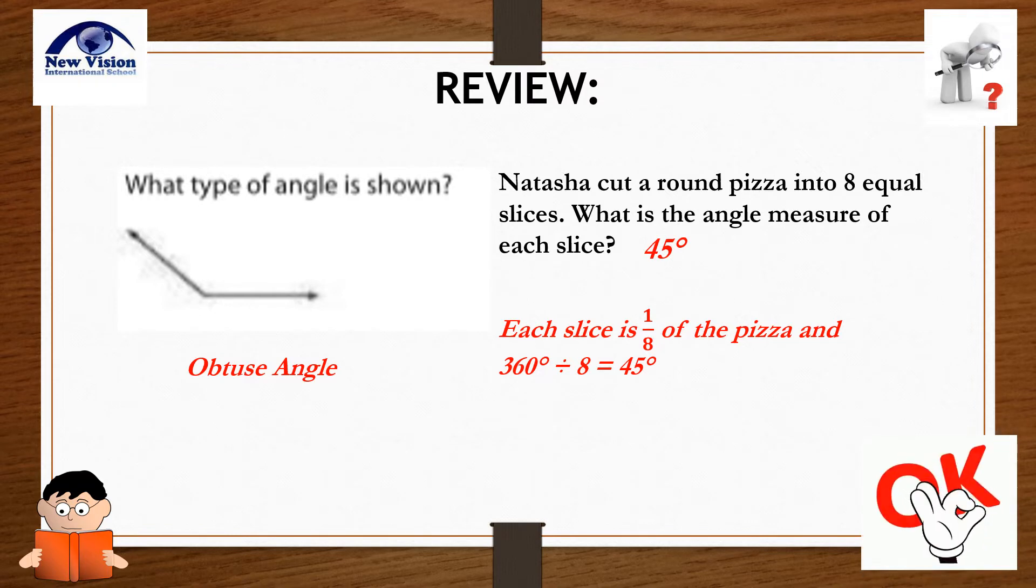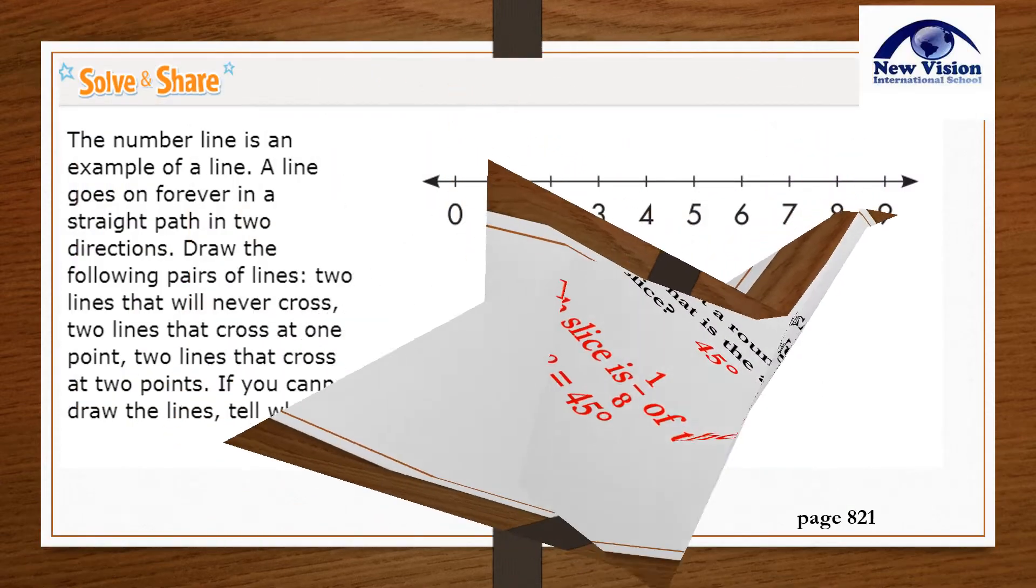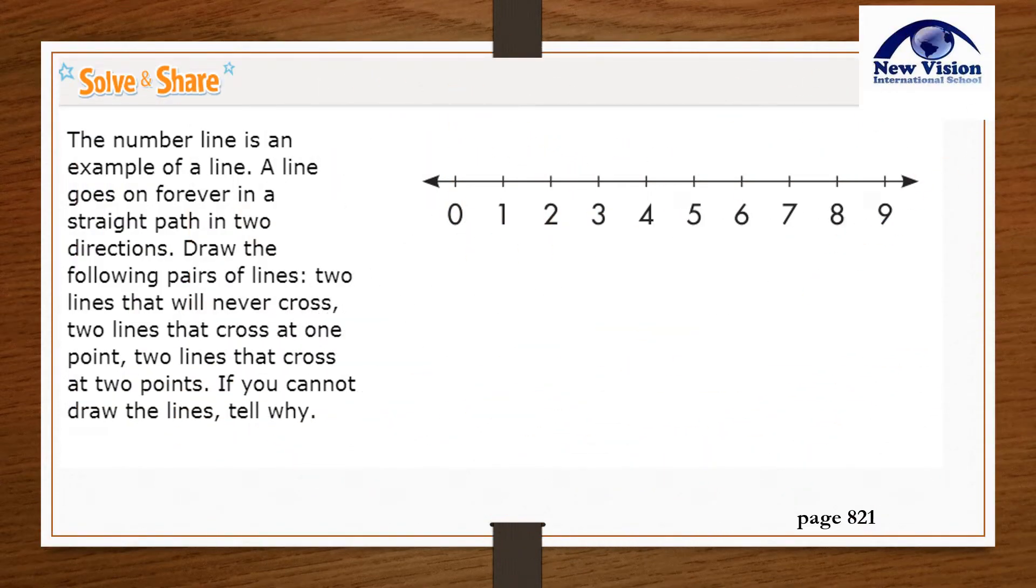Let's proceed to our lesson. Let's start with Solve and Share. The number line is an example of a line. A line goes on forever in a straight path in two directions. Draw the following pairs of lines: Two lines that will never cross. Two lines that cross at one point. Two lines that cross at two points. If we cannot draw the lines, tell why.